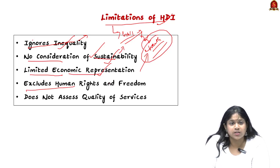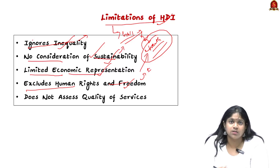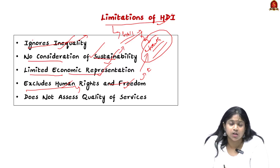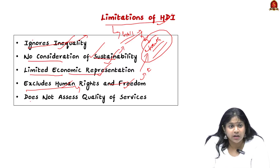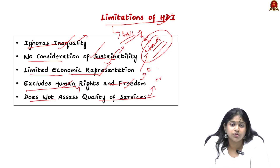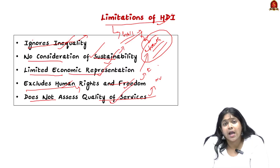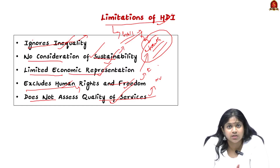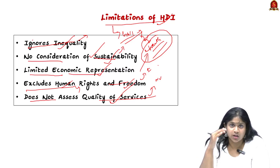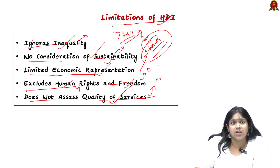The HDI also excludes human rights and freedom. It only accounts for income, health, and education, but excludes factors like political, social, economical, gender-related, and war-related factors. Finally, it does not assess the quality of services — it takes only the numerical average of the three key dimensions but does not assess whether health services, education, or the standard of living are actually accessible across different income categories.